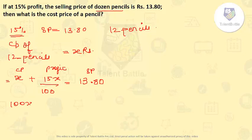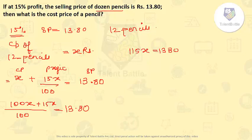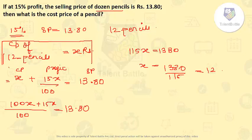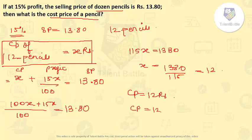Solving: 100x plus 15x upon 100 equals 13.80, so 115x equals 1380, giving x equals 1380 upon 115, which is 12. So the cost price of 12 pencils is rupees 12. They asked for the cost price of 1 pencil, so that is 12 divided by 12, which equals rupees 1.